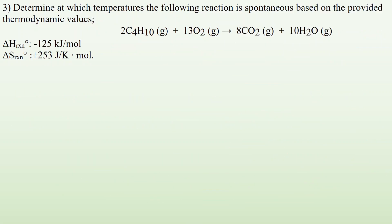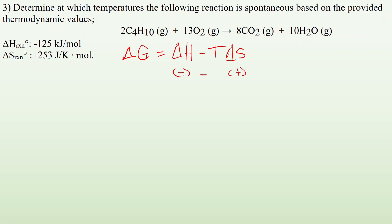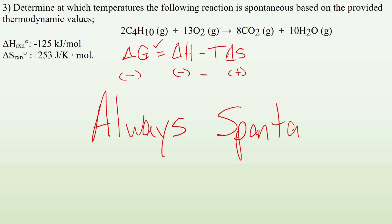Number three: determine at which temperatures the following reaction is spontaneous based on the provided thermodynamic values. Before doing any real math, just checking the signs: delta G equals delta H minus T·delta S. If delta H is negative and delta S is positive, and we're subtracting a positive value from a negative, we will always get a negative delta G. So this reaction is always spontaneous at any temperature.